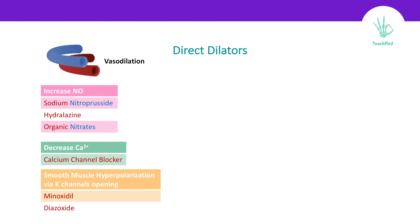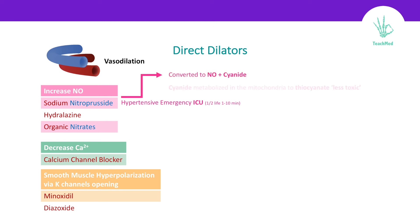Sodium nitroprusside can be used in hypertensive emergency in the ICU because it has a short half-life of 1 to 10 minutes, making it easily titrated and monitored. A hypertensive emergency means blood pressure greater than 180 over 110 with the presence of end-organ damage. Sodium nitroprusside is converted to nitric oxide and cyanide — cyanide is toxic, but the mitochondria can handle it and convert it to thiocyanate, which is less toxic. However, the patient can develop thiocyanate poisoning if they have renal failure.